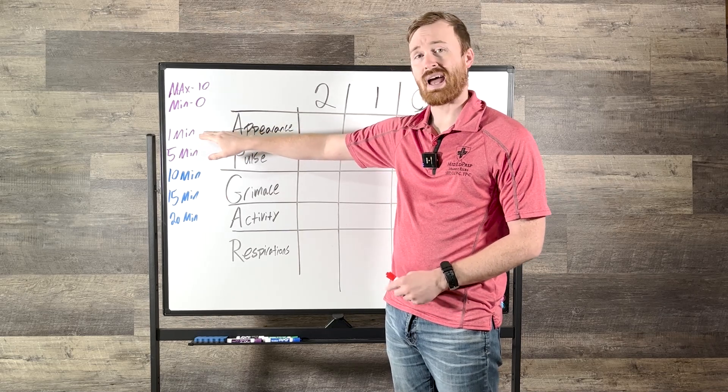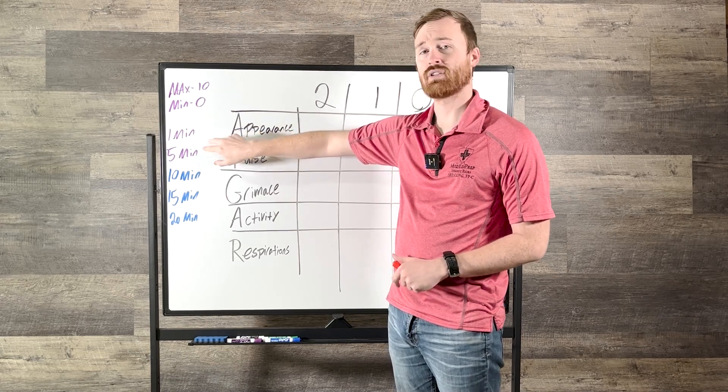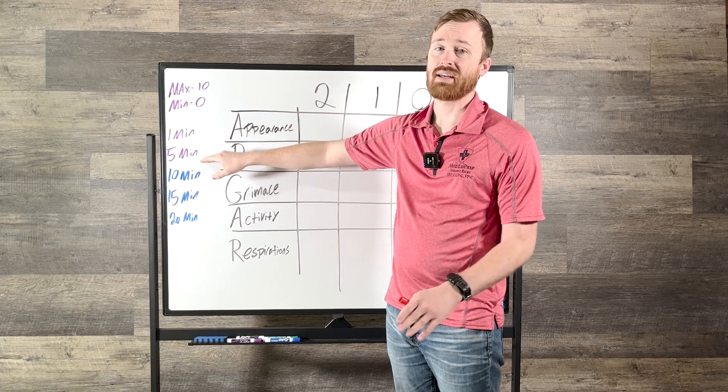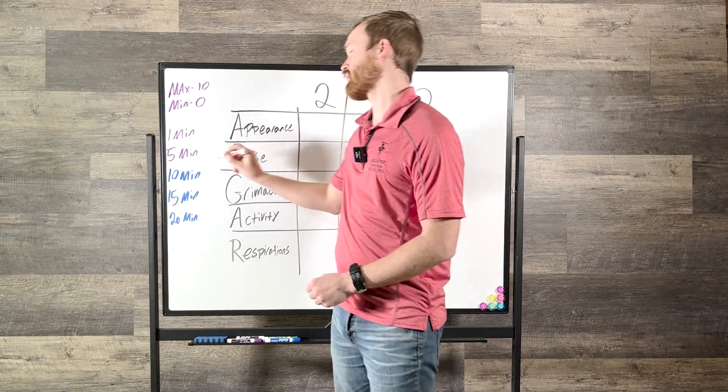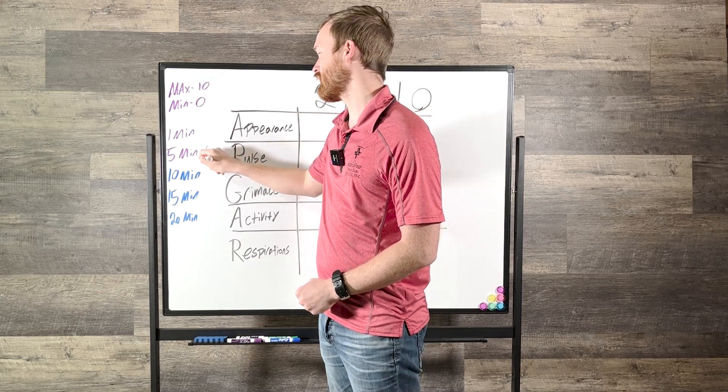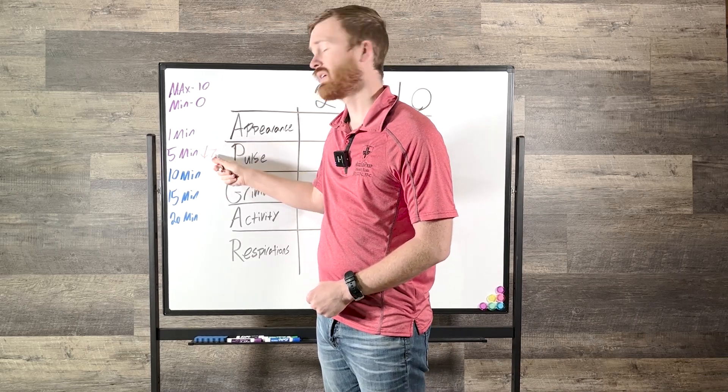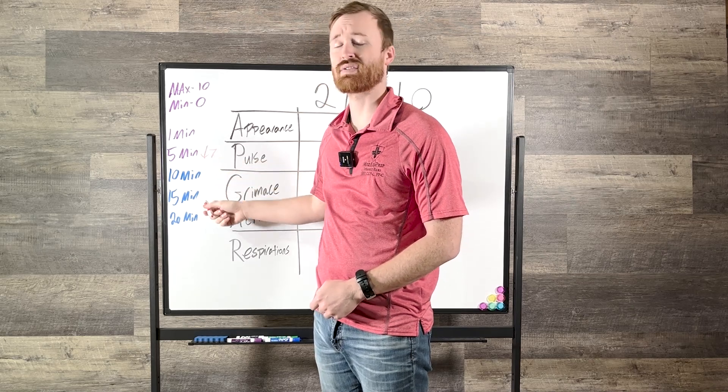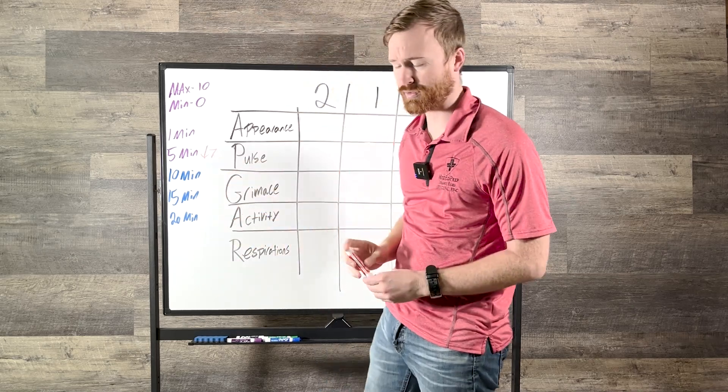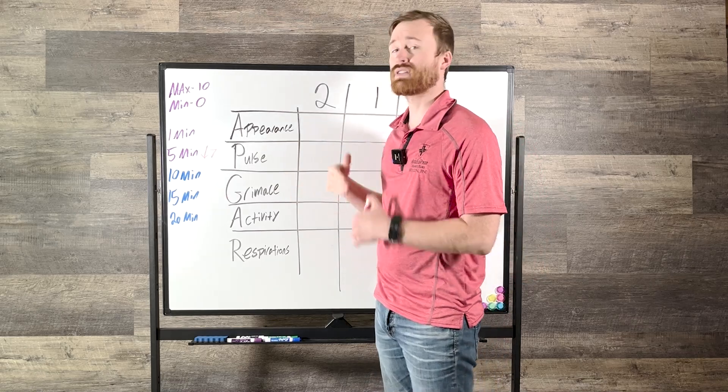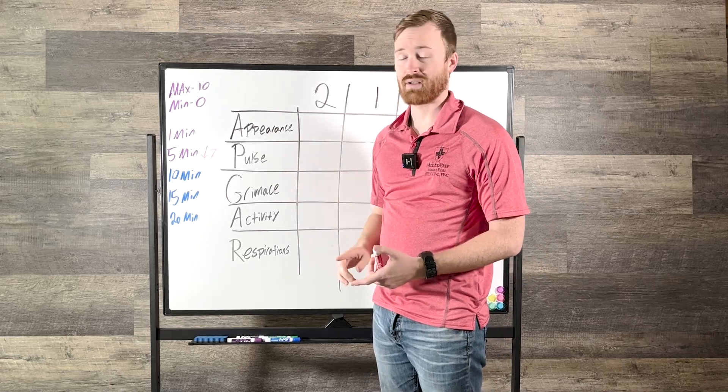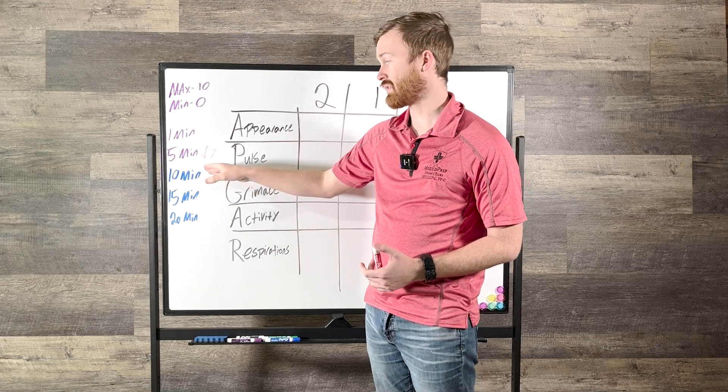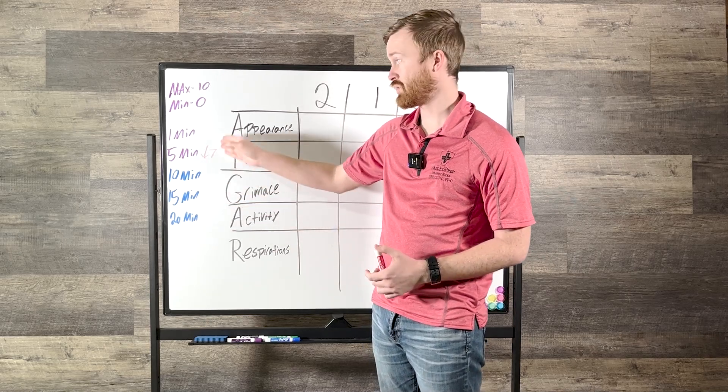You're going to do it at least twice, and that's going to be one minute after birth and five minutes after birth. If, and only if, your five-minute APGAR is less than seven, then that is going to be the point that you are going to do it at 10 minutes, 15 minutes, and 20 minutes. And you're going to do this to continue to resuscitate, whether it be oxygen, drying, warming, stimulating, or whatever, to see if you can get their 10 minute, 15 minute, 20 minute up to above seven.